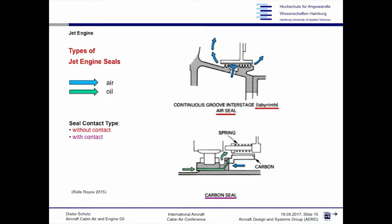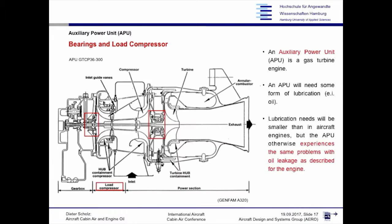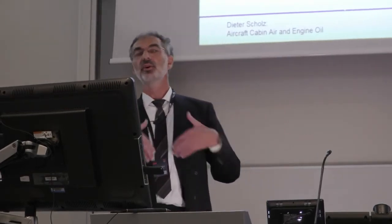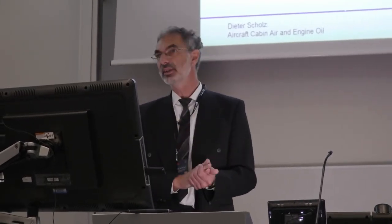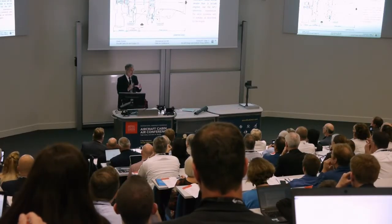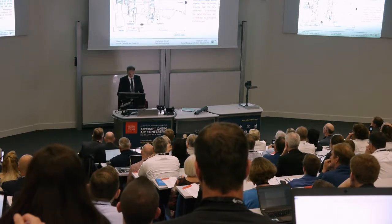An APU is a gas turbine, but the bleed air from modern APUs comes from a load compressor, not the gas turbine compressor itself. People might think that means the air is clean, but the APU still has bearings with labyrinth seals, just like the engine. The APU is a smaller device — the larger the device, the more power and forces, the larger the seals, the hotter and more complicated it gets. With a separate load compressor just compressing air, you can control leakage and even use air bearings.